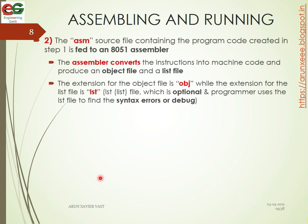The ASM source file created in step 1 is fed to the 8051 assembler. The assembler converts the code into machine code and produces two output files: an object file with extension .obj, and a list file with extension .lst. The list file is optional and is used by the programmer to find syntax errors or debug the program.